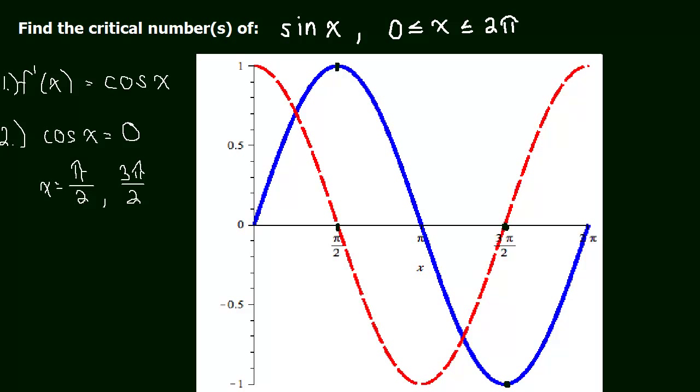And then we could do what we did in the last video and break this into intervals and try and examine them in that way. So to the left of π/2, cosine is positive, so the slopes of sine should be positive. Or in other words, to the left of π/2, the derivative is positive, so the slope should be positive. And that's true.